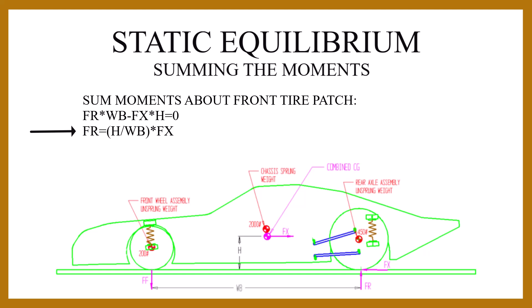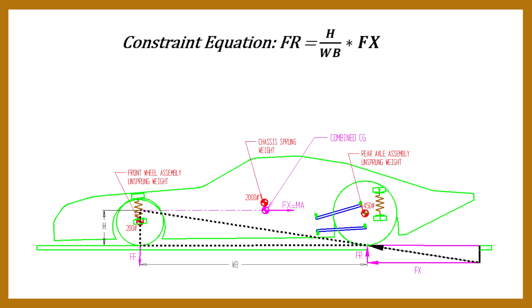No matter what the hit force FX is, it's always proportional to FR by a factor of H divided by WB. We call this a constraint equation. FR is constrained to FX by a factor of H divided by WB. This ratio, the height of the combined CG H divided by the wheelbase WB, is a slope.